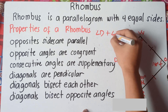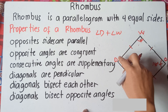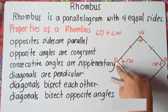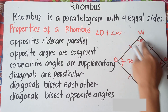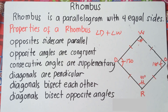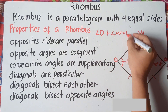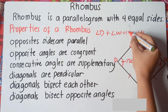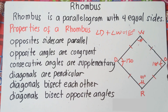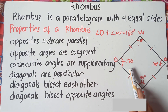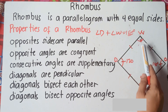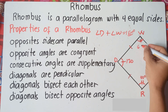Consecutive angles means this angle and this angle next to each other. So angle D and angle W are consecutive angles, and angle W and angle O are consecutive angles. Angle D plus angle W should equal 180 degrees. If angle D is 120 degrees, then angle W must be 60 degrees, so that together they make 180 degrees.